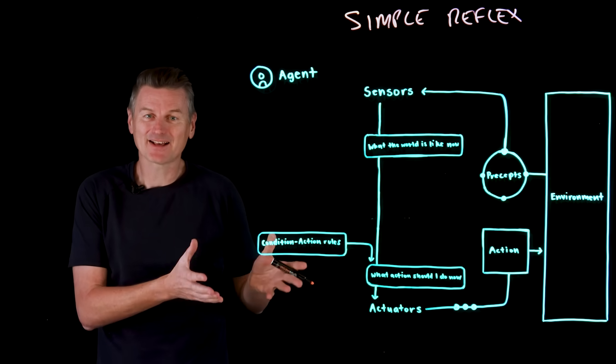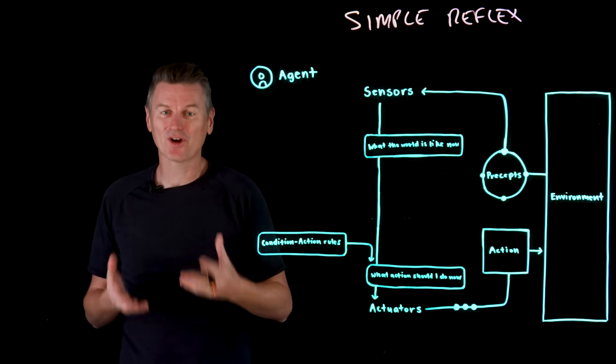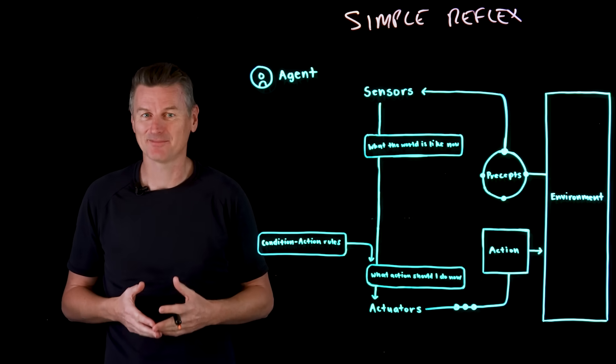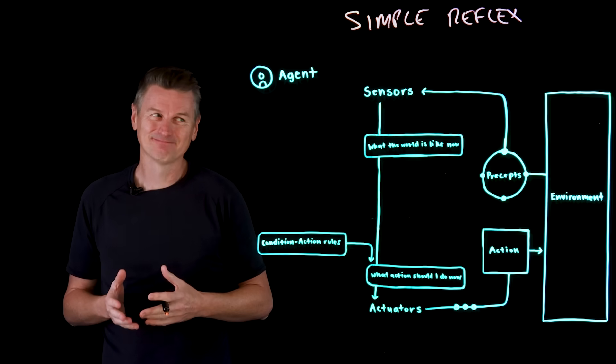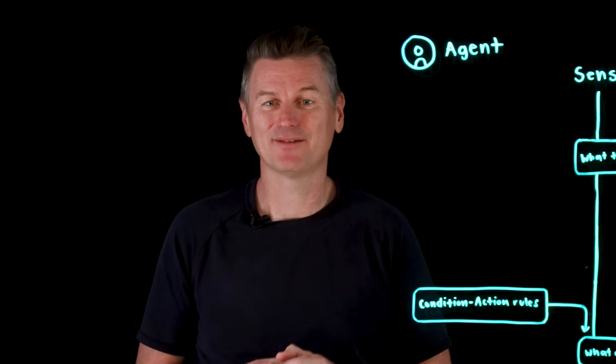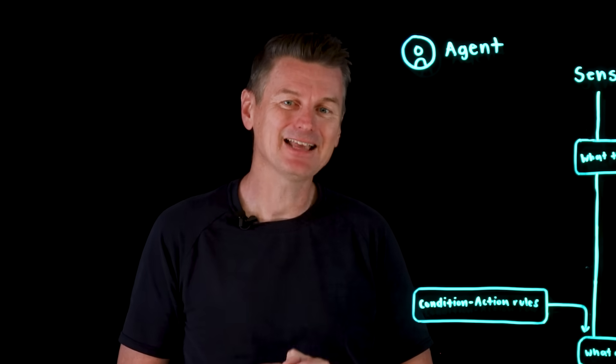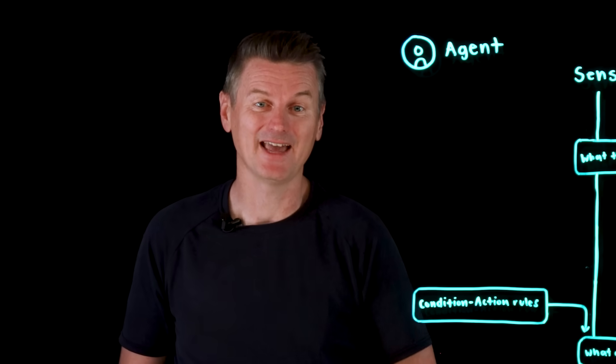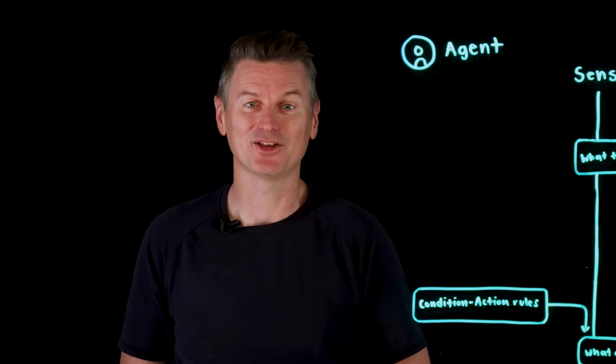Simple reflex agents like this are effective in structured and predictable environments where the rules are well-defined. But dynamic scenarios can trip these agents up, and because they don't store past information, they can repeatedly make the same mistakes if the predefined rules are insufficient for handling new situations.